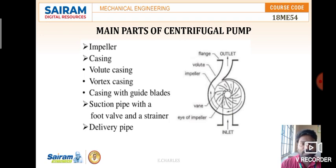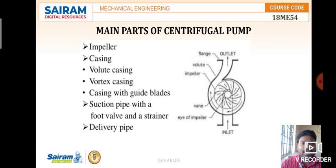The main parts of the centrifugal pump are: impeller, casing (including volute casing, vortex casing, and casing with guide blades), suction pipe with a foot valve and strainer, and delivery pipe. The impeller is the most important part of any pump or turbine. It is mounted on the shaft, with a series of fixed or movable blades forming the rotor assembly, which directly produces the pressure energy of water.